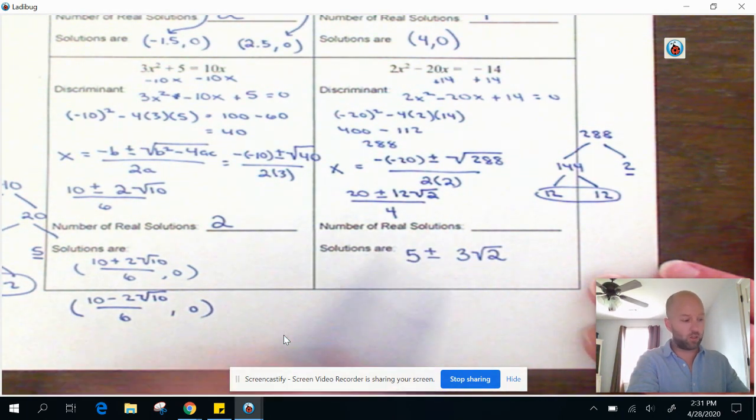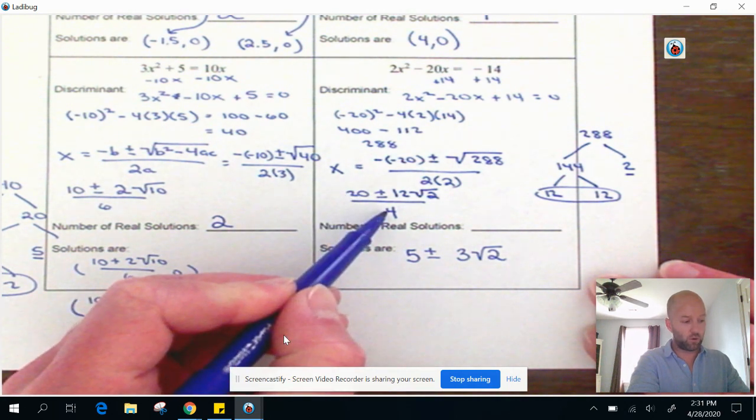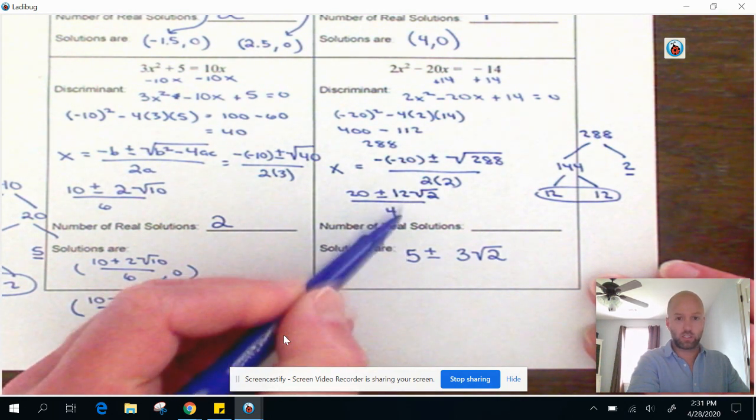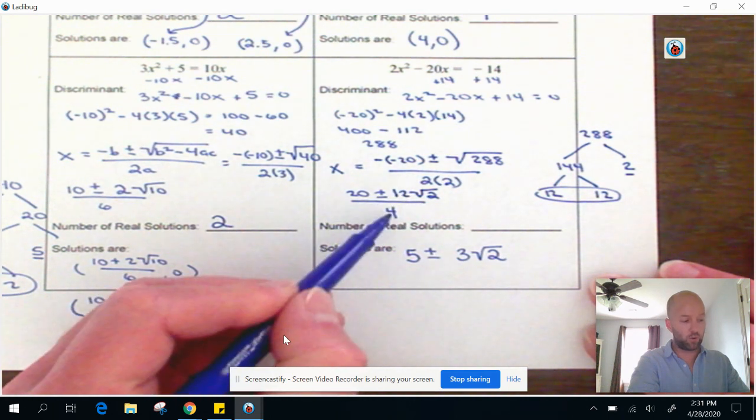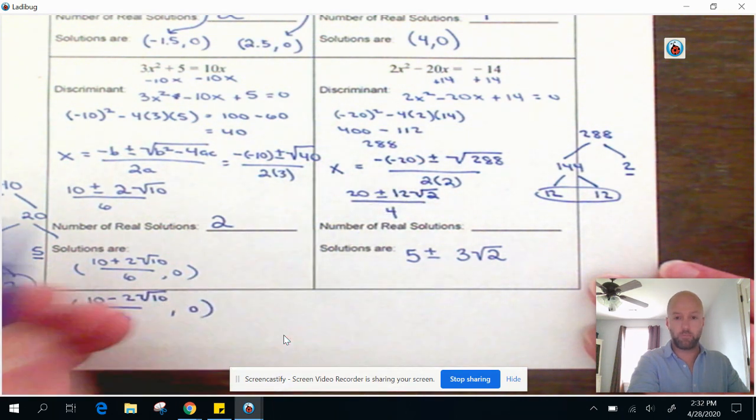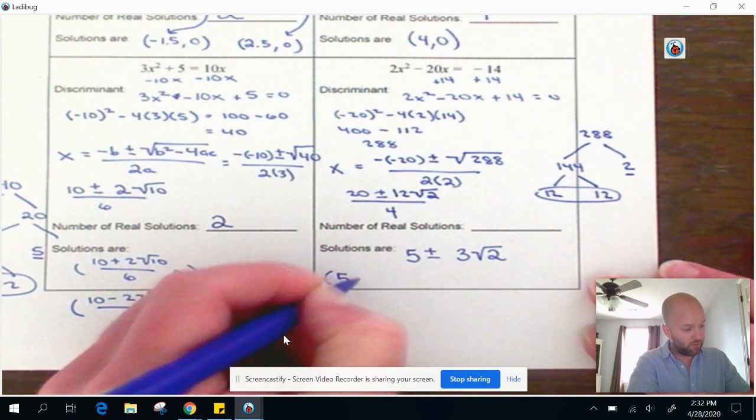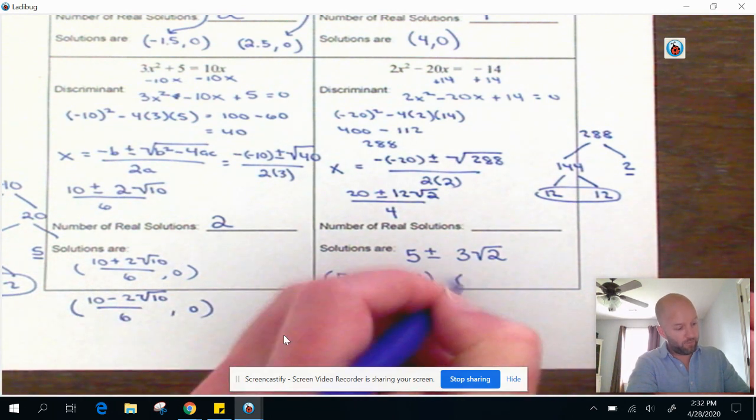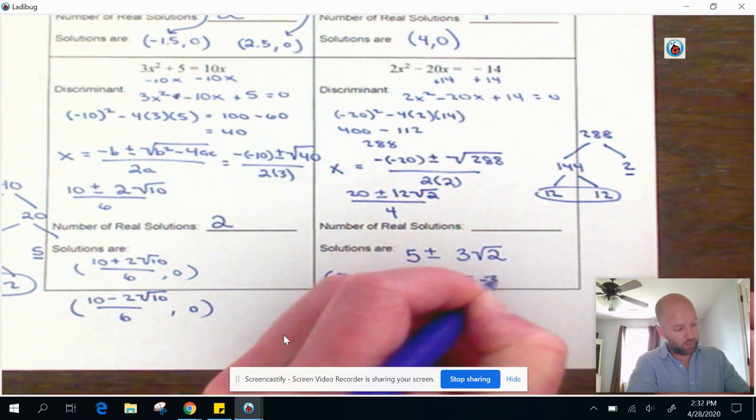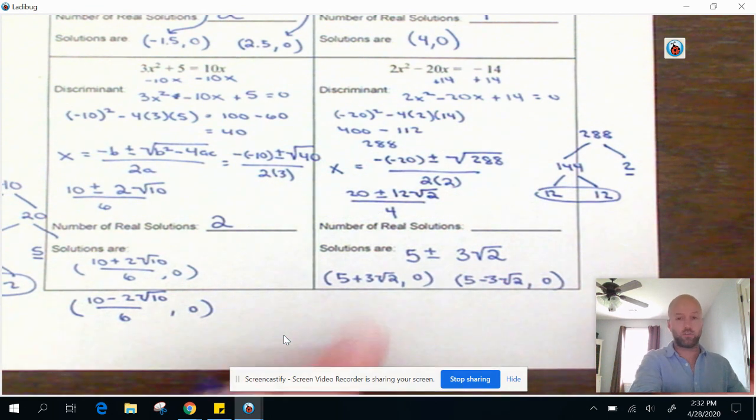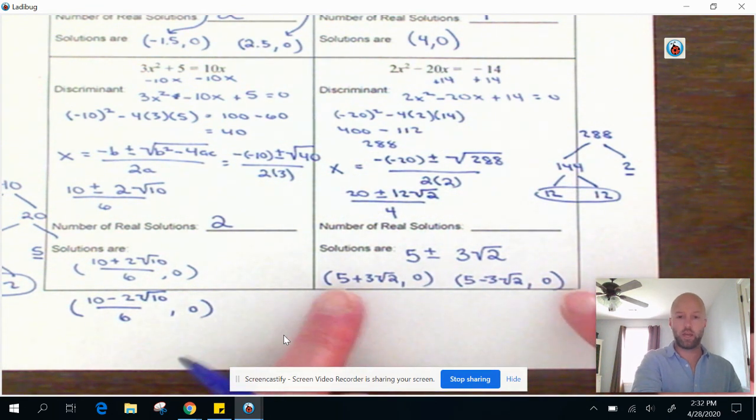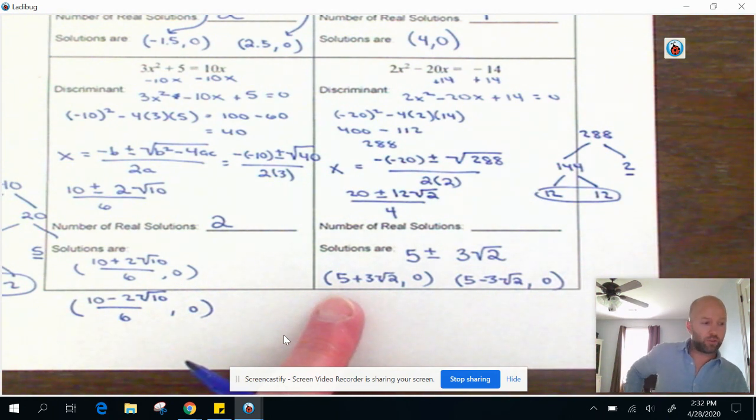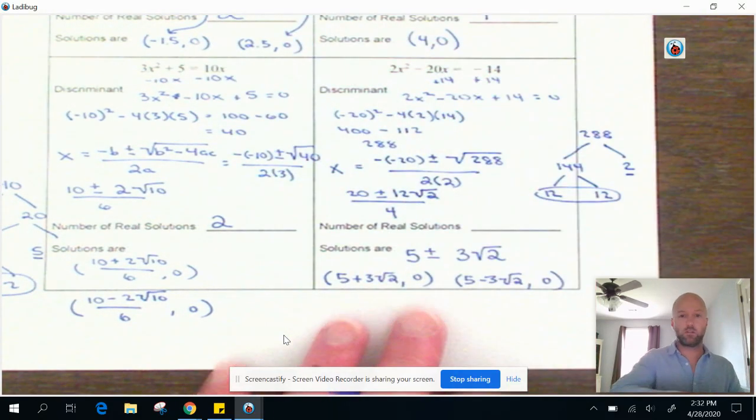Now, the 4 is gone, right? Because we divided the 20 into 4 groups, there were 5. And it's gone for this side, too, because 12 divided into 4 groups was 3 groups. So our two solutions are 5 plus 3 square root 2 paired with 0, and 5 minus 3 square root 2 paired with 0. So these are our two x-intercepts, or the solutions. All right, so make sure that you get these problems done for homework this time. I'm going to assign all four of these.